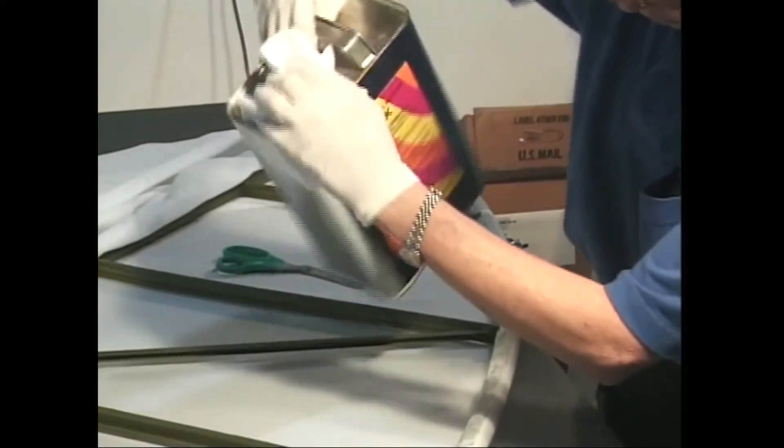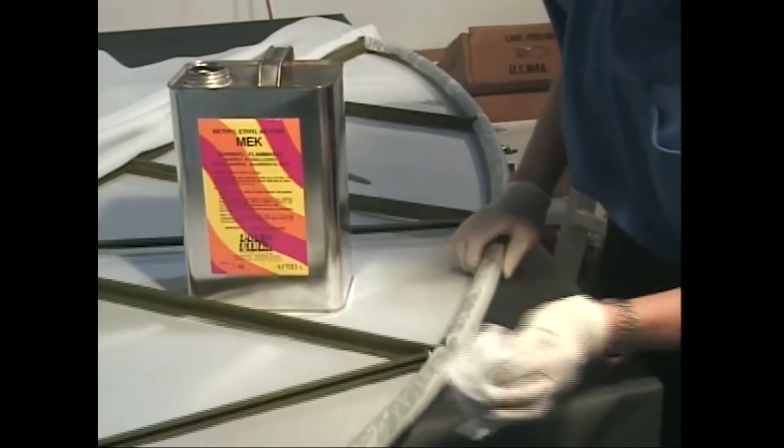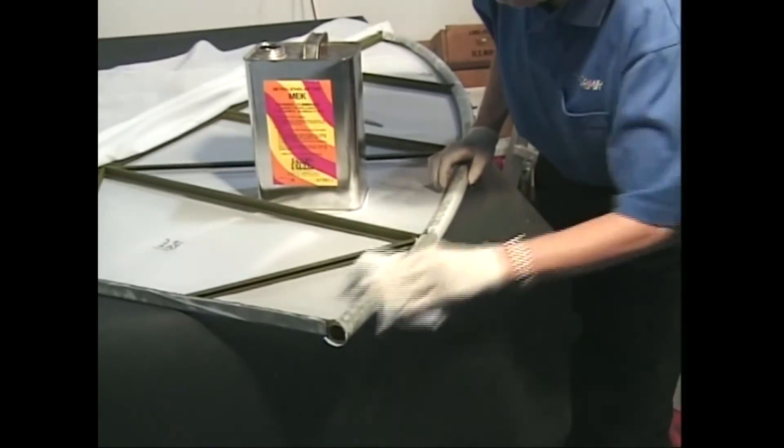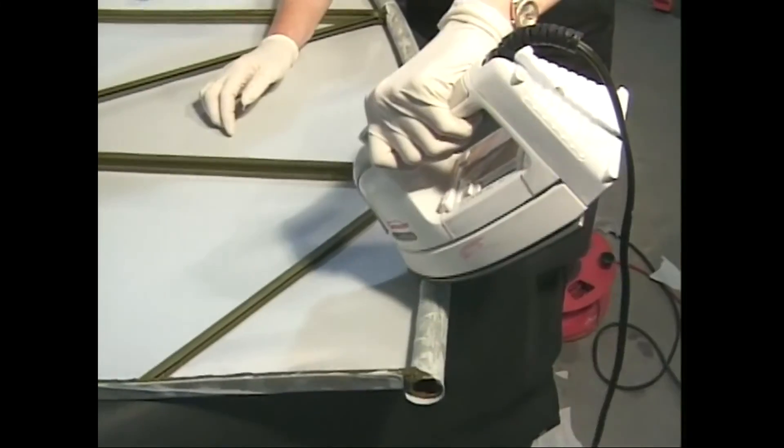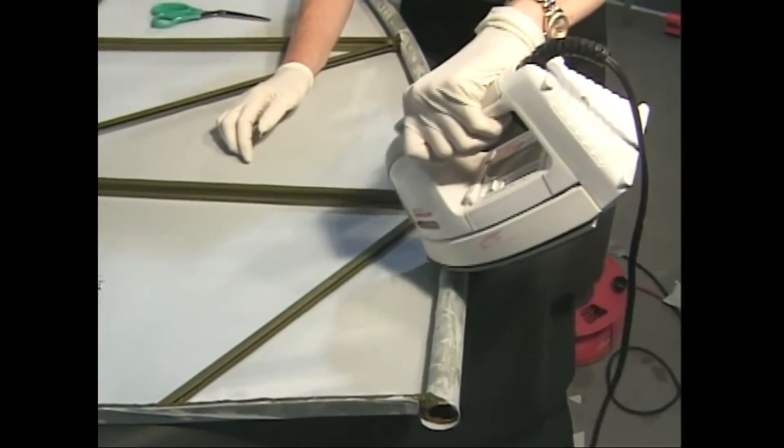Now one side is complete. Clean up any drips and roughness from the poly-tack seeping through the fabric with MEK. Smooth any wrinkles with the iron before cementing the top fabric to the bottom.